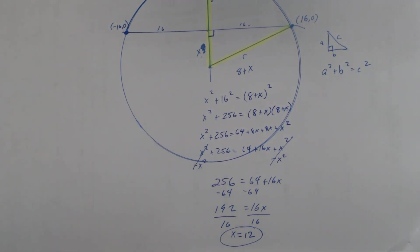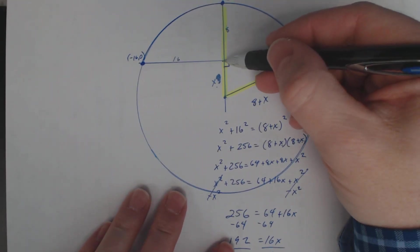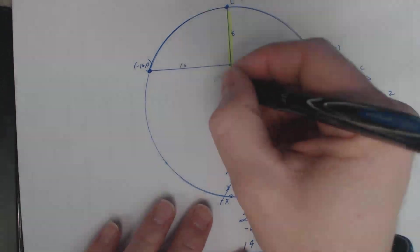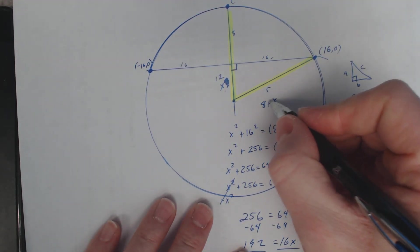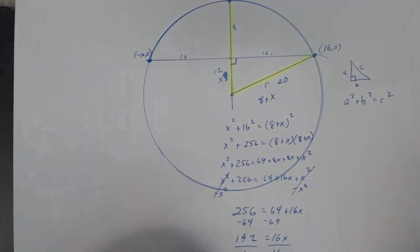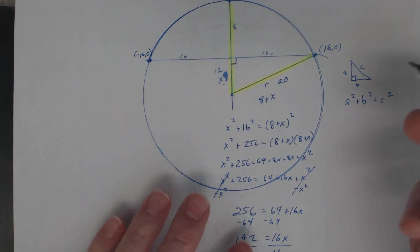So what does that mean? It means that this length right here is 12. So that means the radius is 8 plus 12, which is 20. The radius here is 20.